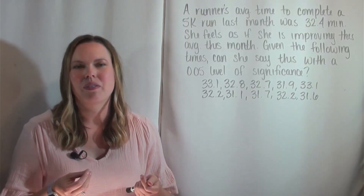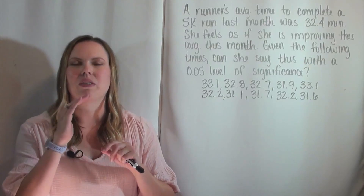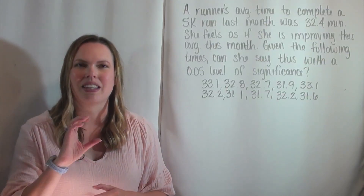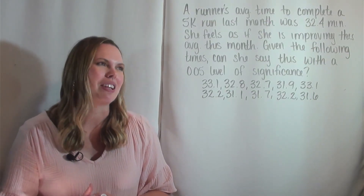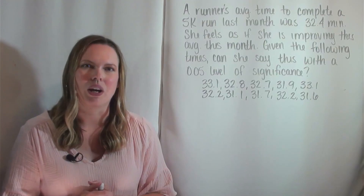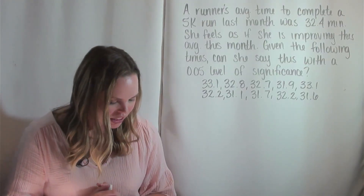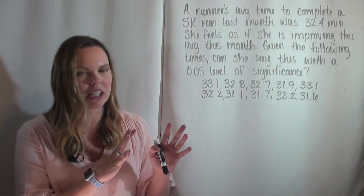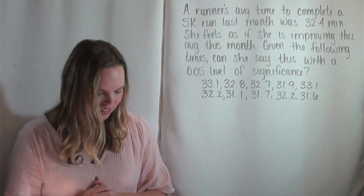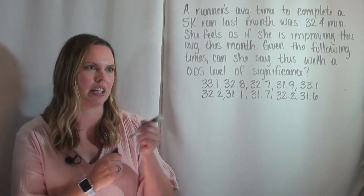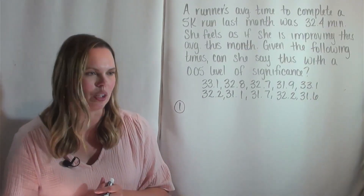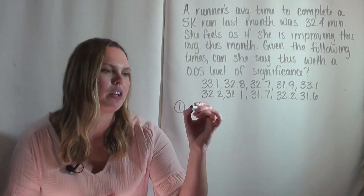I have a little card that I use with my students that walks through the steps of hypothesis testing. I'll put a picture of it in the description or comments so you can follow along. The first step is to state the null and the alternative hypothesis in the context of the problem, and also set the level of significance.